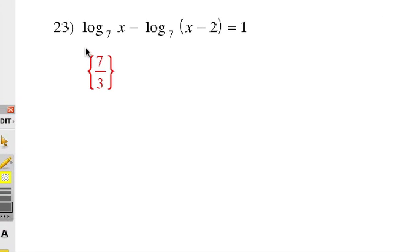Number 23, log base 7 of x minus log base 7 of x minus 2 equals 1. Now, remember that a lot of this basically depends on your ability to look at the structure of the equation and find out what's really going on. We have a log base 7 there, log base 7 there, and that's good. We want to make sure we have the same log base there, and we have this expression minus this expression. Because of the properties we've talked about, that becomes a quotient.